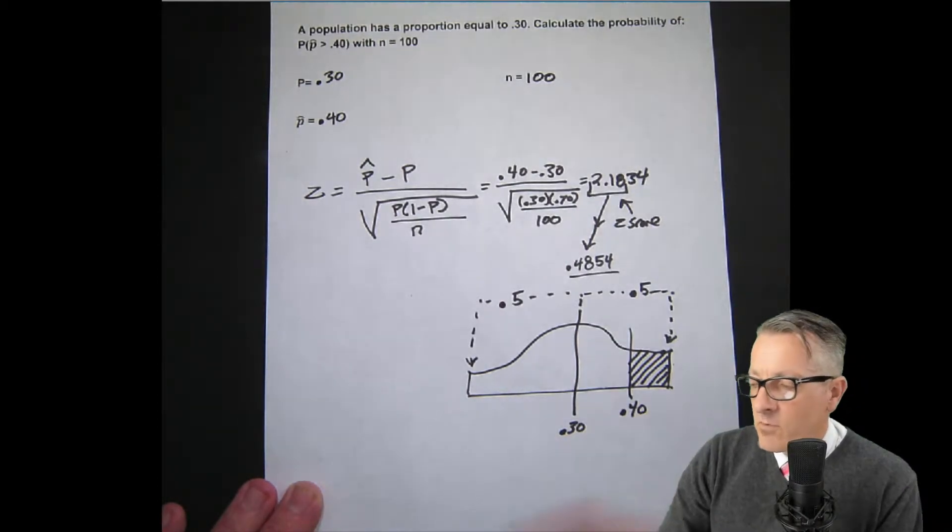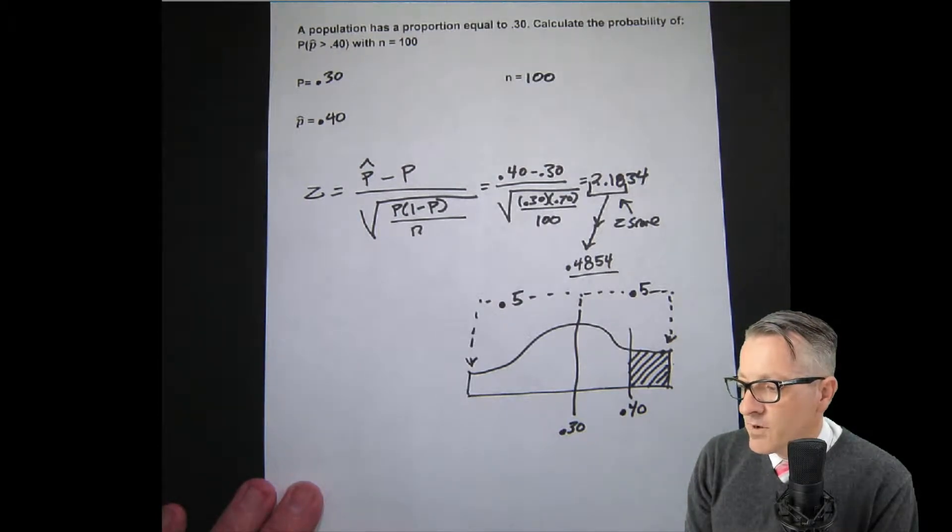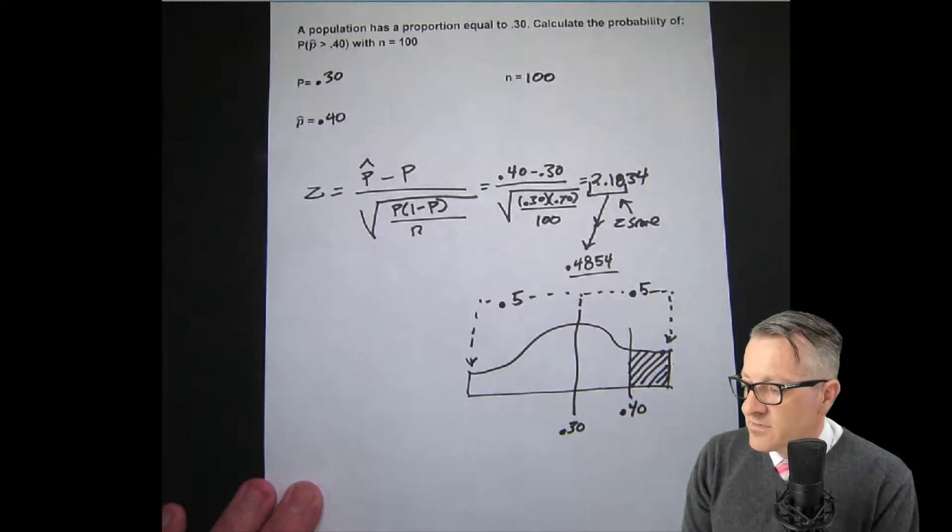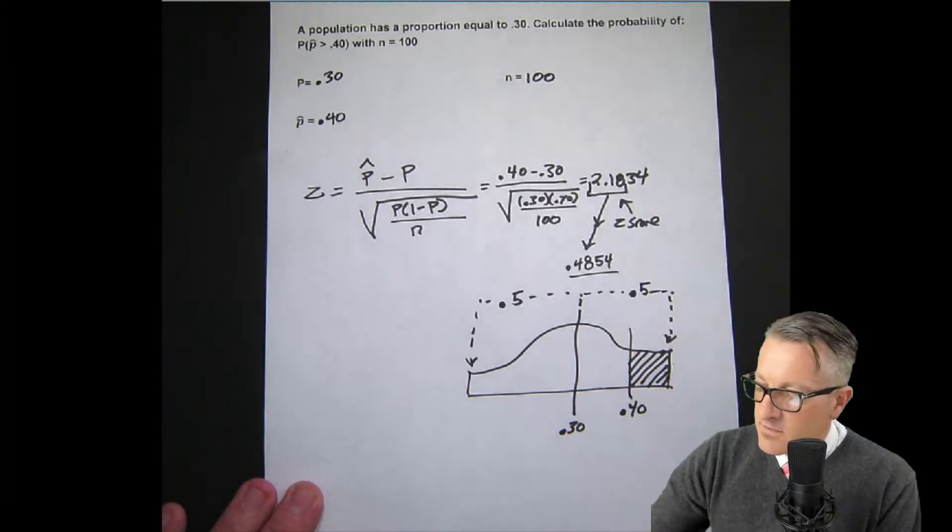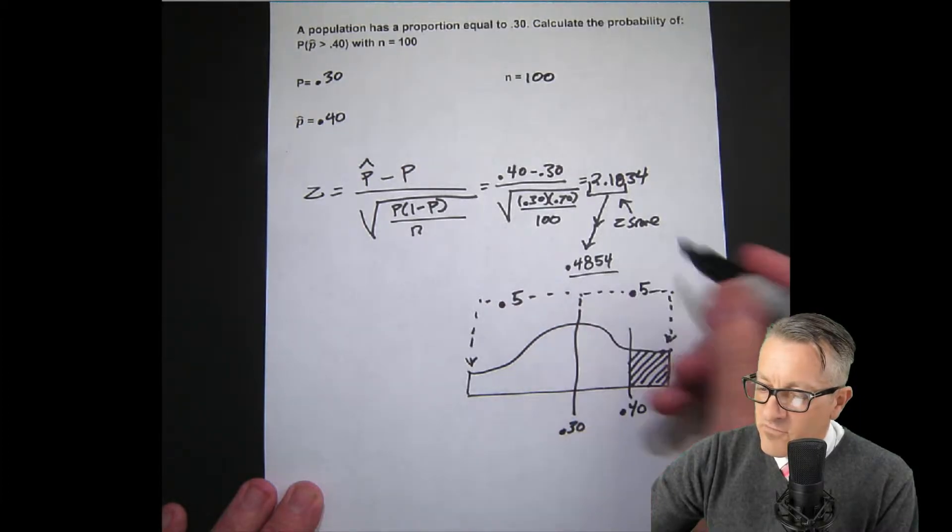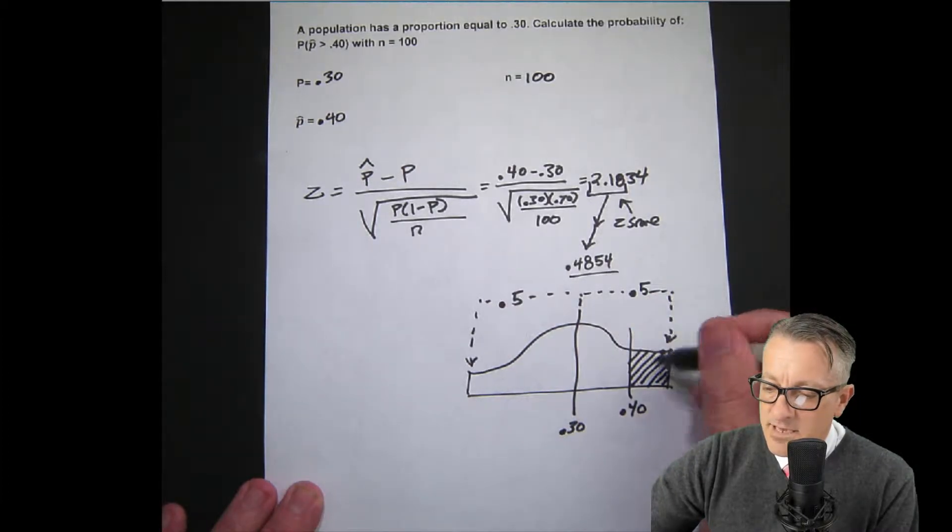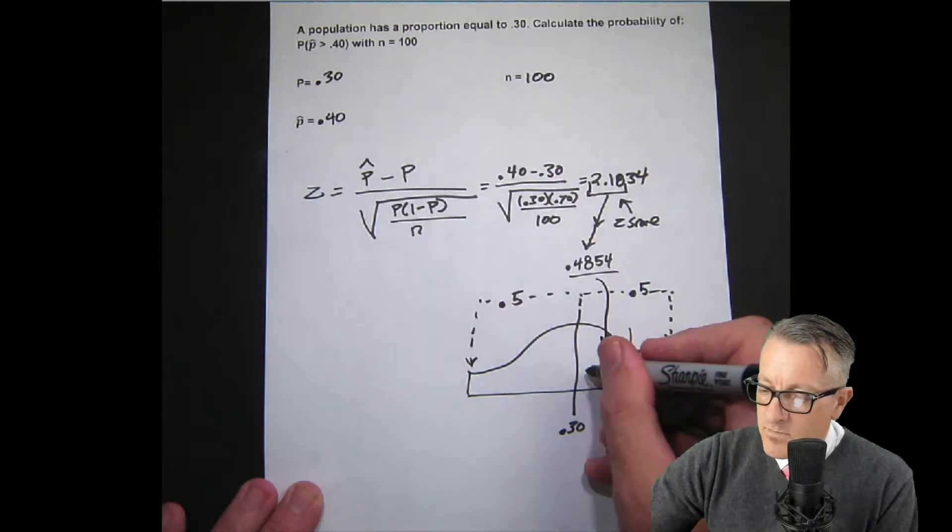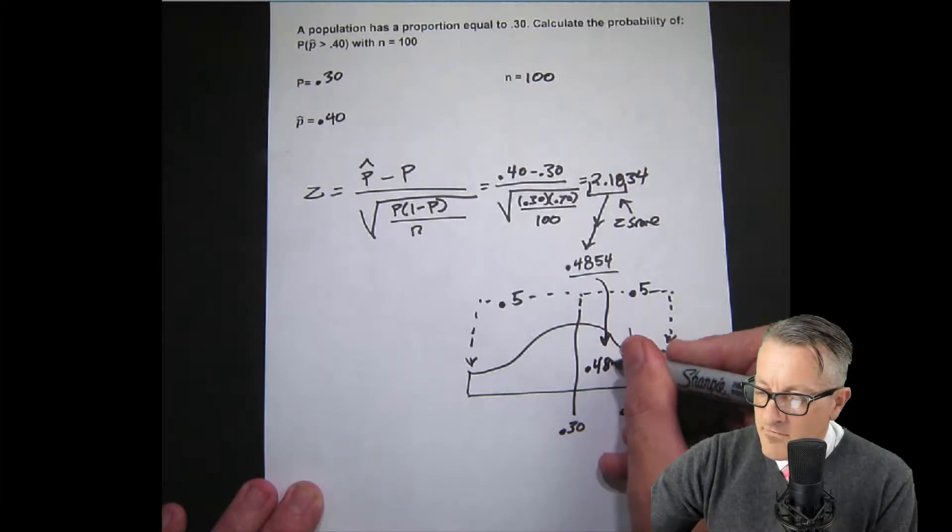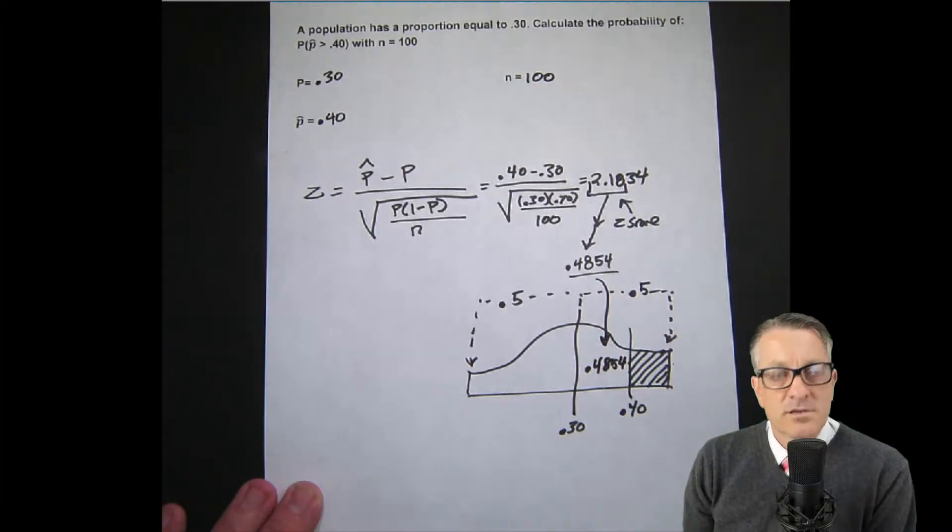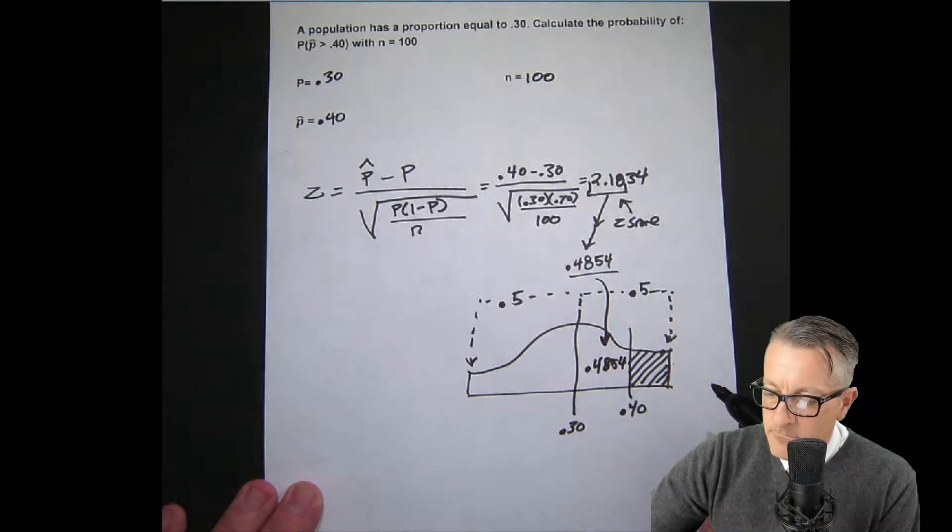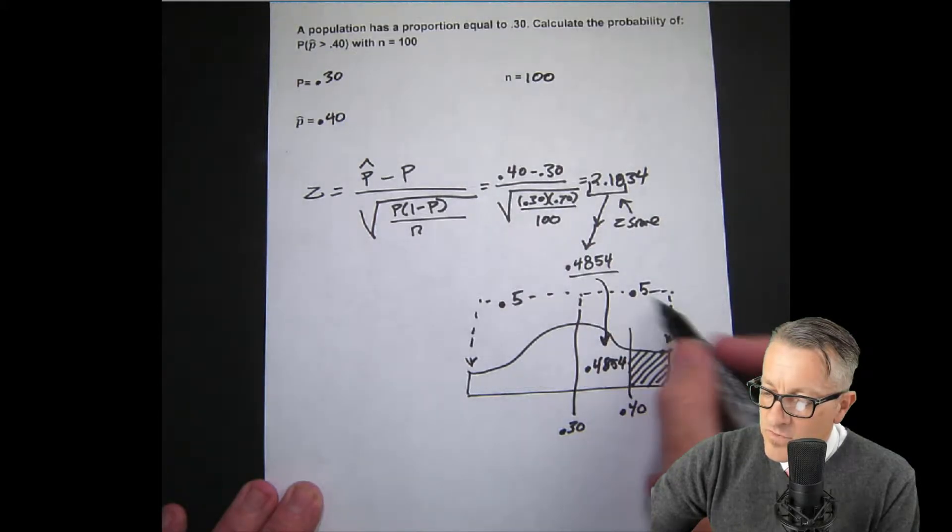This number, whenever we pull a probability from the table, the probability that I ended up calculating here, 0.4854, is always in the center area, not in the tail. So we pull this down, so this is our 0.4854. I hope you see where we're going with this. If this is 0.4854 and we're trying to find this area, and we know the whole thing over here on this side is 0.5, then we're going to take 0.5 subtract 0.4854.